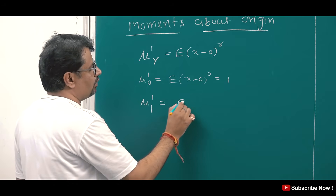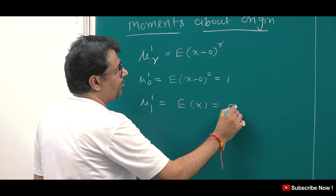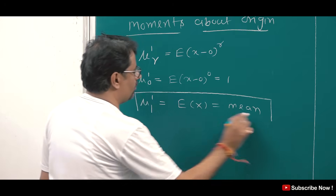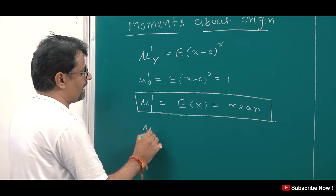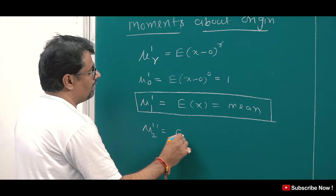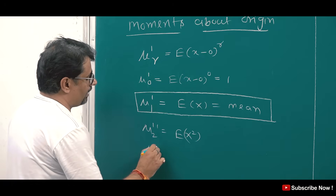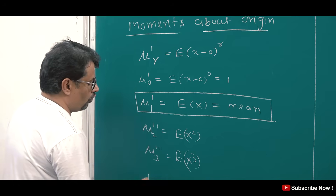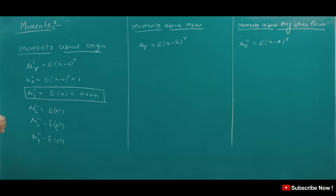The first moment about origin is the mean. We need to remember that. Now the second moment will be E(x squared). The third moment will be E(x cubed). The fourth moment will be E(x to the power 4). These are our moments about origin. We can also talk about moments about any other point: mu_1 double dash is E(x minus a), mu_2 double dash is E(x minus a) squared, mu_3 double dash is E(x minus a) cubed, and mu_4 double dash is E(x minus a) to the power 4.